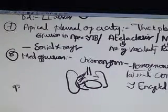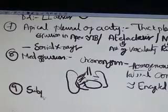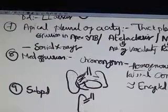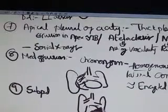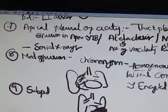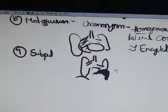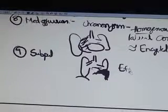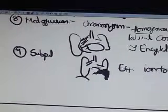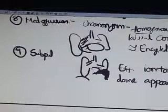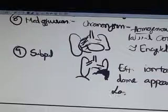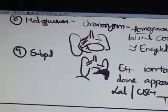Coming to the final one, subpulmonic effusion. This is lungs, mediastinum here. The effusion appears to track along the domes of diaphragm, so it appears like elevated dome. Effusion tracking along the dome appears like elevated. Lateral view and USG confirms.